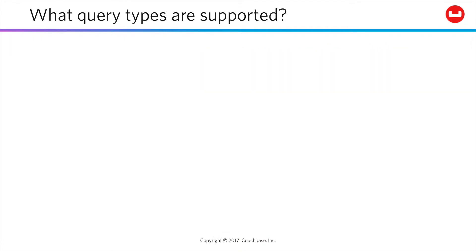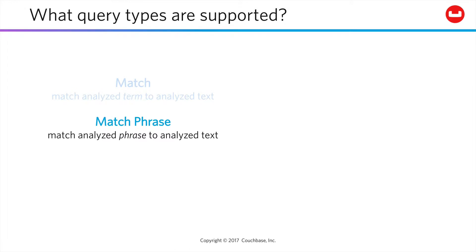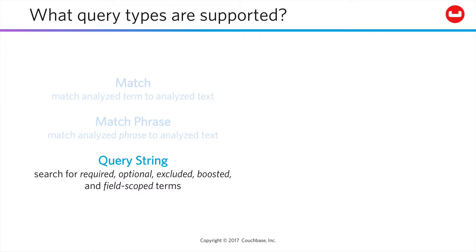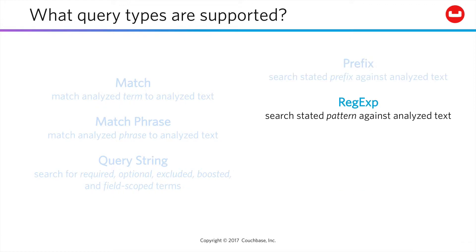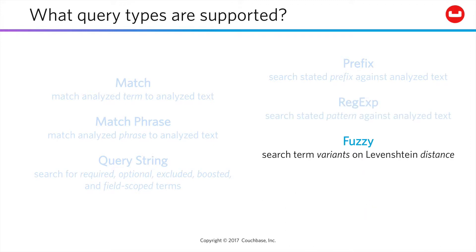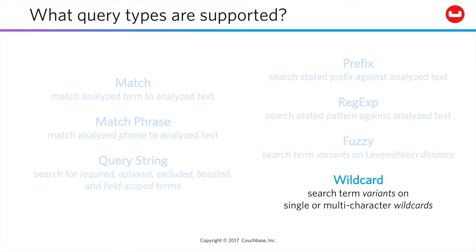Couchbase supports numerous types of full-text query. You can perform a basic match of an analyzed term against analyzed text, match a whole phrase against analyzed text, and search for individually required, optional, excluded, or boosted terms in either all indexed fields or just one particular field. You can search for words using a specified string as a prefix, search using a regular expression pattern, perform fuzzy searches that match terms within a specified degree of character variance, or do a wildcard search using single and multiple character wildcards.